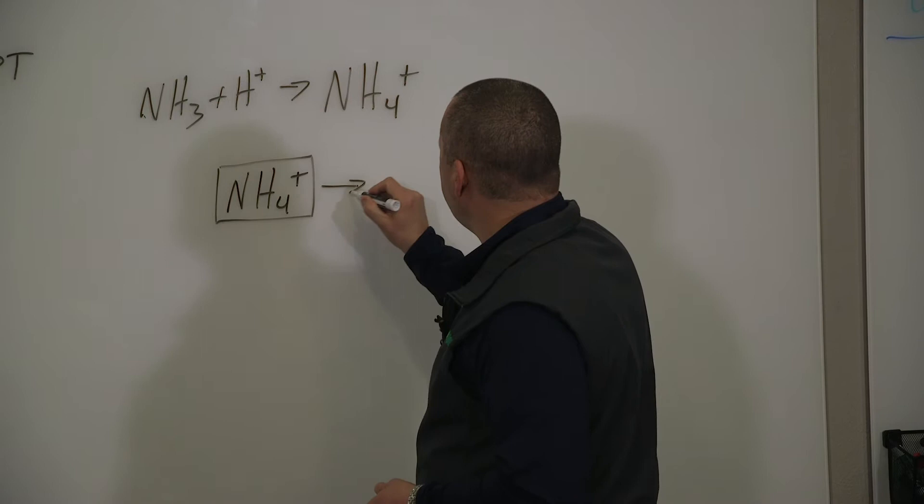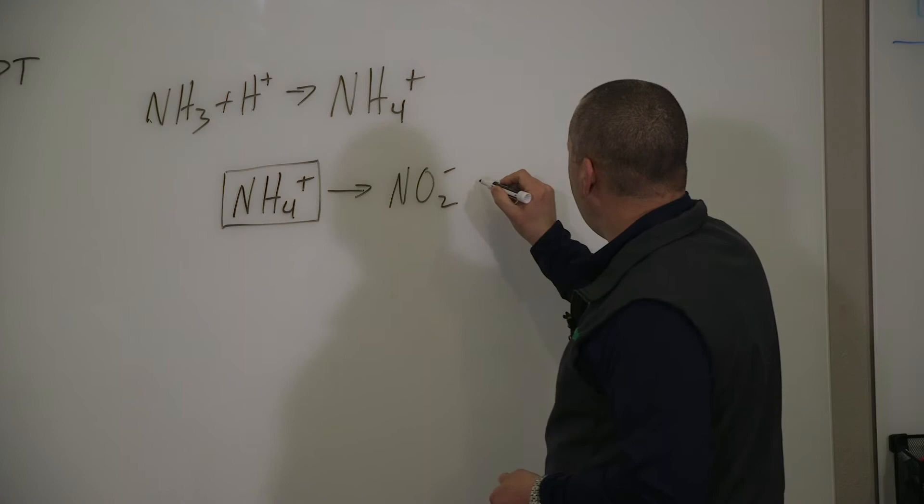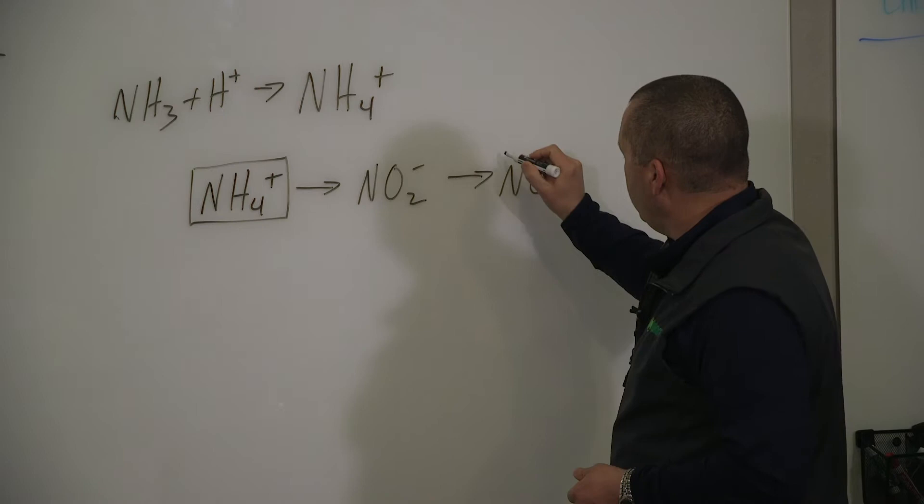It converts to nitrite, which is a negatively charged ion. And then it'll convert to nitrate, which again is a negatively charged ion.